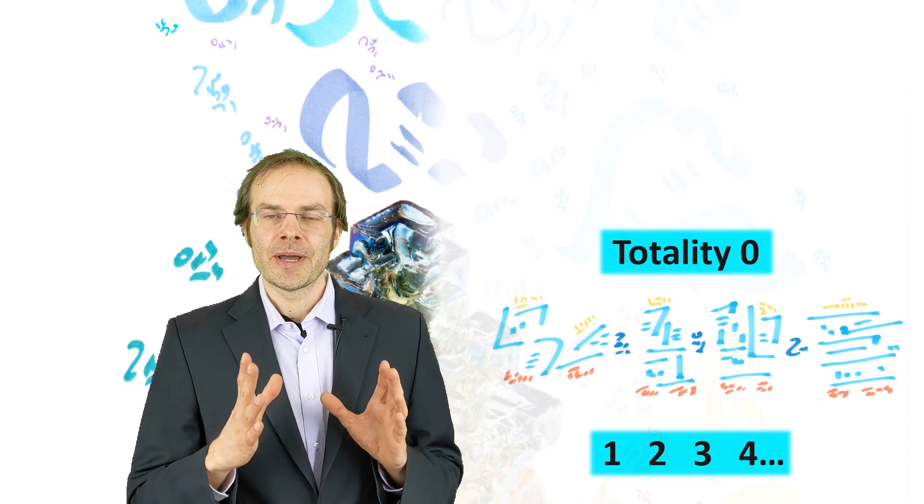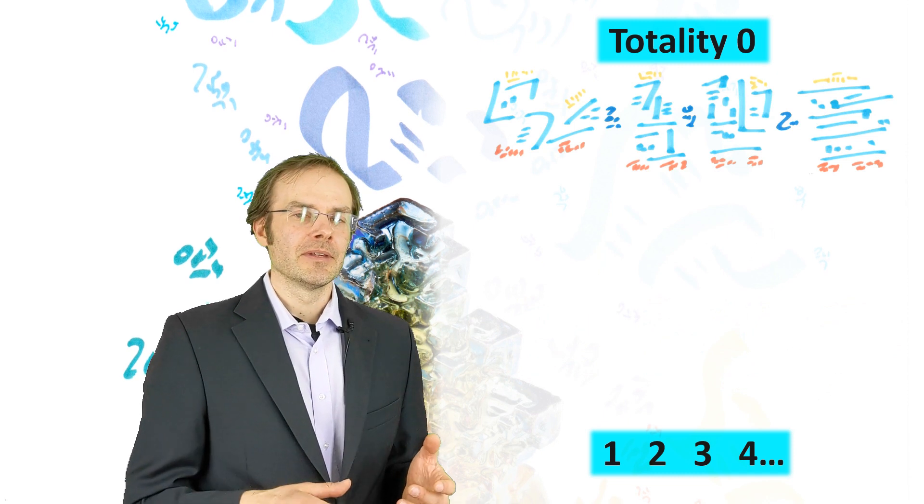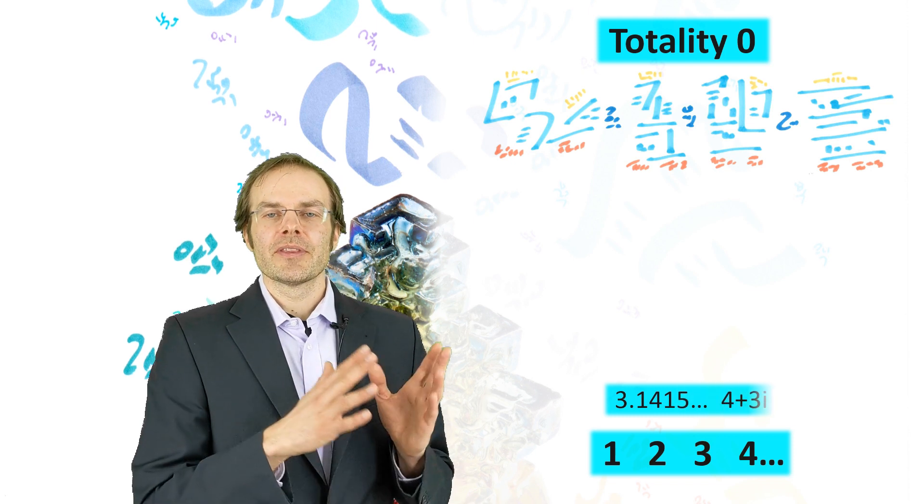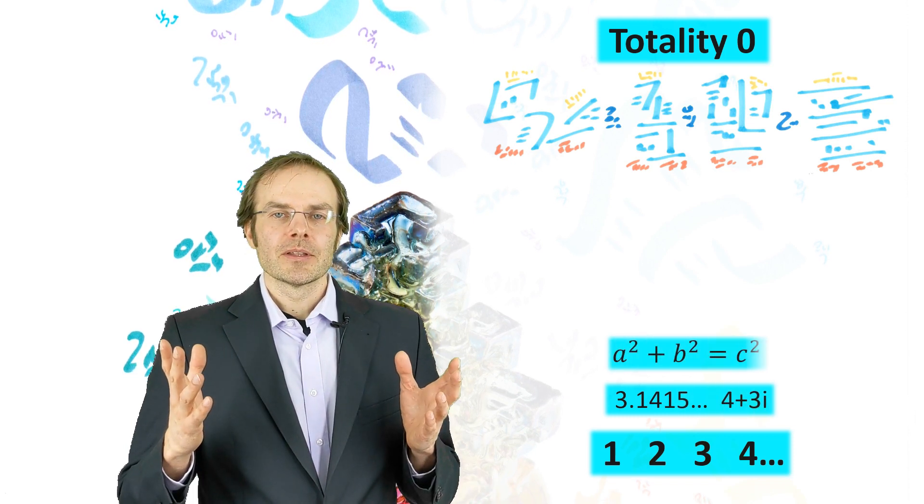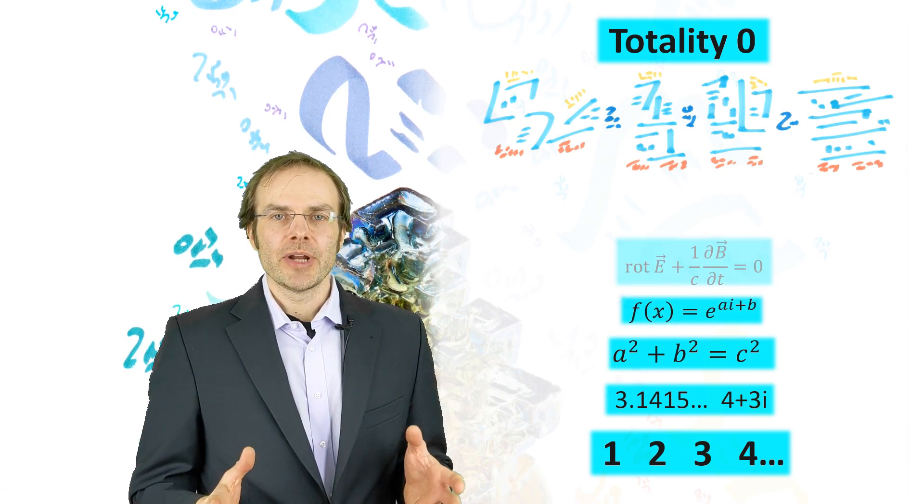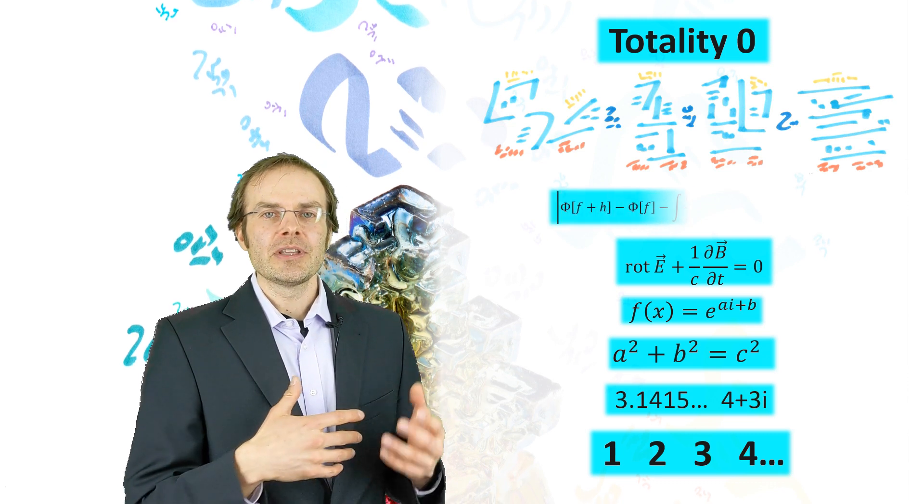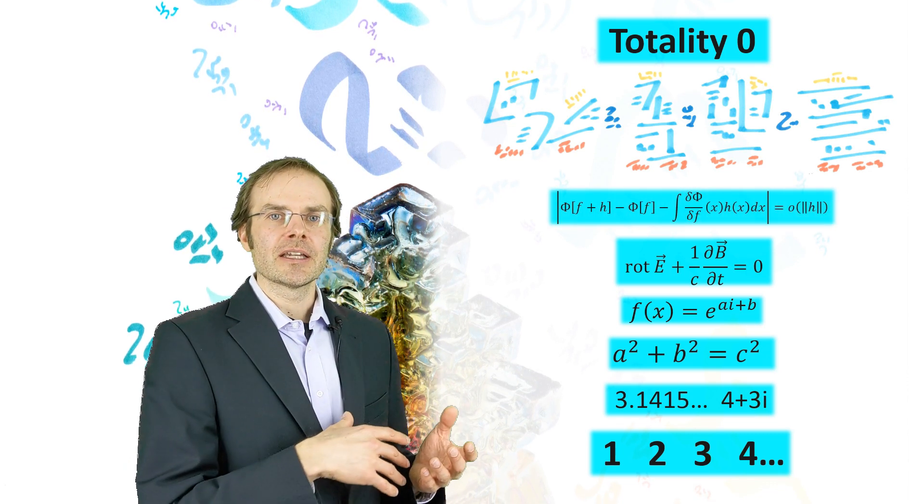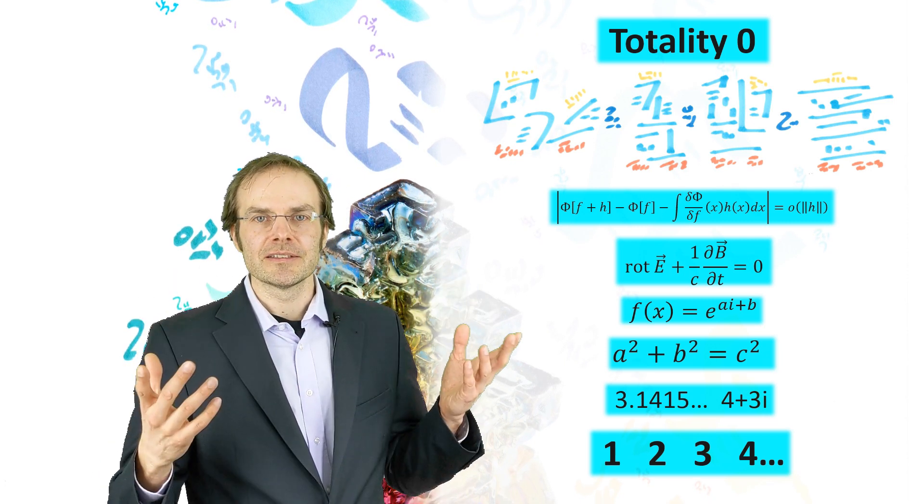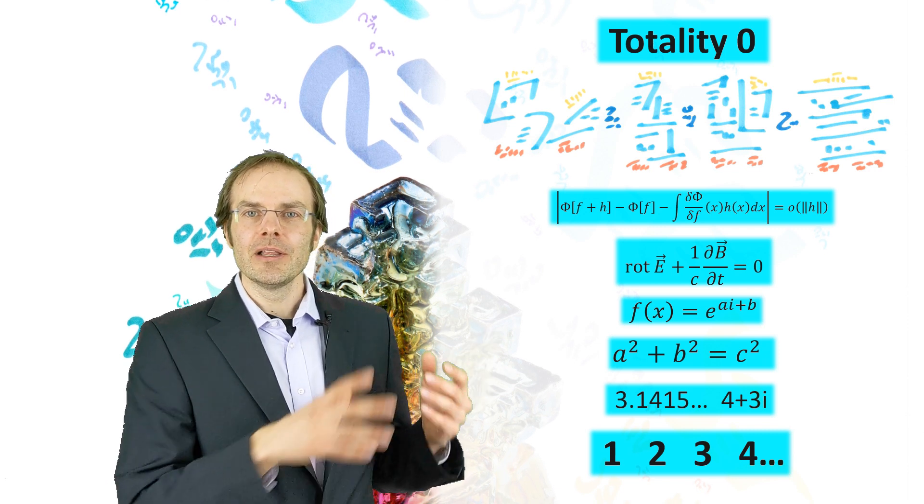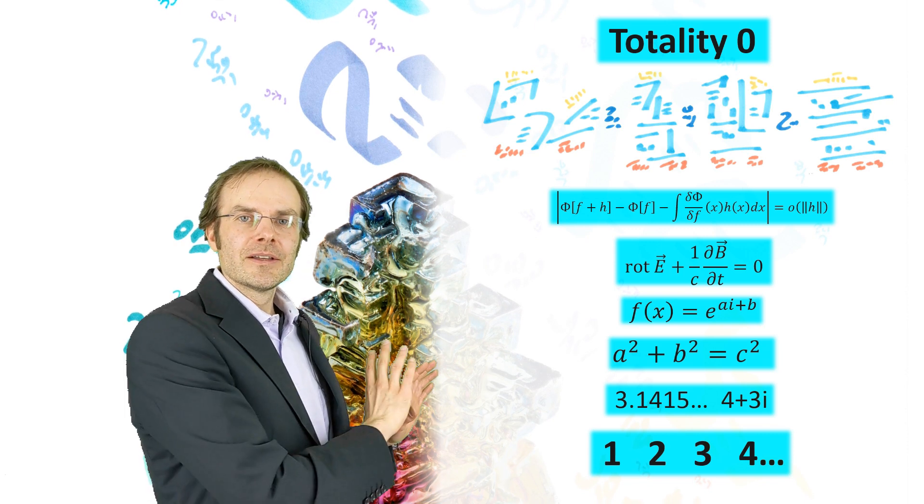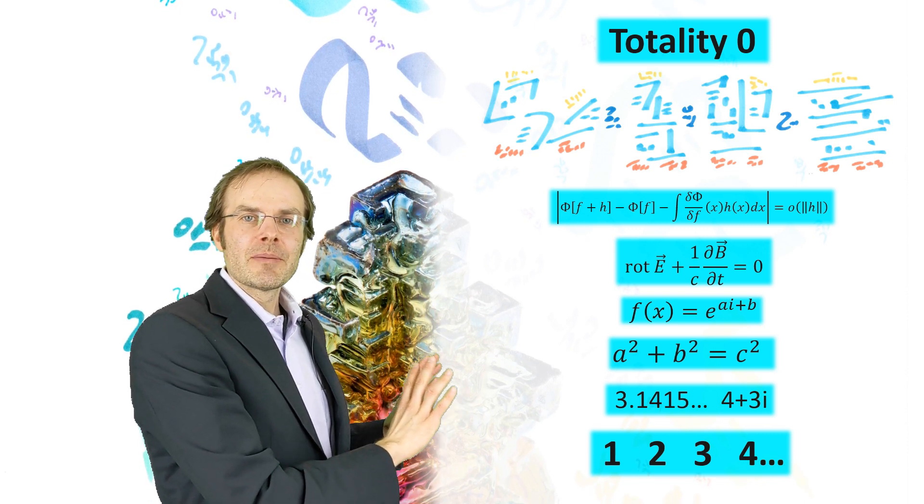So with natural numbers, I can create the real numbers, and out of them, complex numbers. And with the numbers in general, I can do addition, multiplication, any kind of operation. I can treat them as functions and differentiate and integrate them, define operators, and do functional analysis and so on. Well, so far this whole totality zero—that's everything that we can describe mathematically.